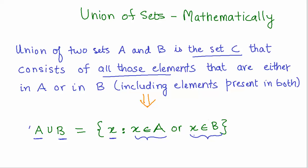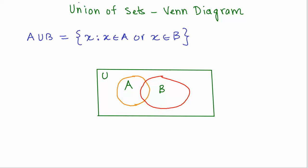That is what union of sets is. If we were to represent that using a Venn diagram, the mathematical form is A union B is the set of all elements X where X belongs to A or X belongs to B.